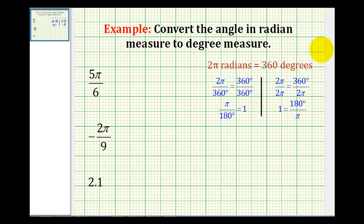In this video, we'll take a look at several examples of converting angles in radian measure to degree measure. To do this conversion, we multiply it by something called a unit fraction, and it's based upon the definition that two pi radians is equal to 360 degrees.